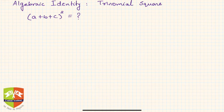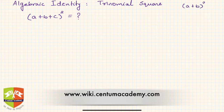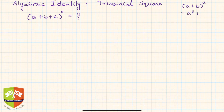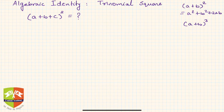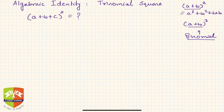Let's carry on with our series of lectures on algebraic identities. So far we have discussed algebraic identities with binomial terms — for example, (a + b)² = a² + b² + 2ab, and we also discussed (a + b)³ and so on. These are all identities related to binomials. A binomial is an algebraic expression carrying only two terms.